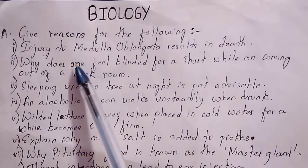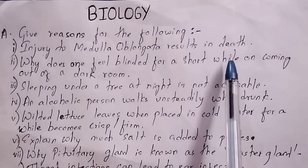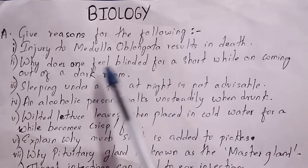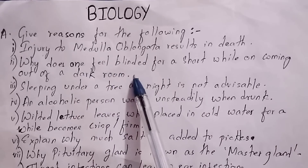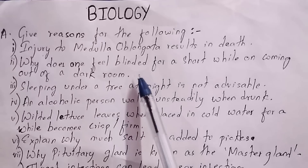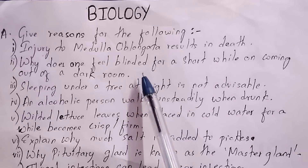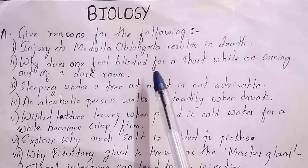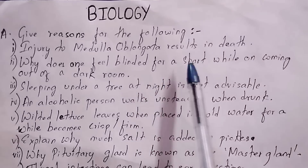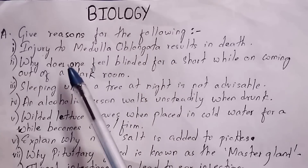Question 2: Why does one feel blinded for a short while on coming out of a dark room? When we come out of a dark room we feel a dazzling effect for a very short period — this is called light adaptation. In this case the diameter of the pupil is reduced to allow less light to enter the eyes.